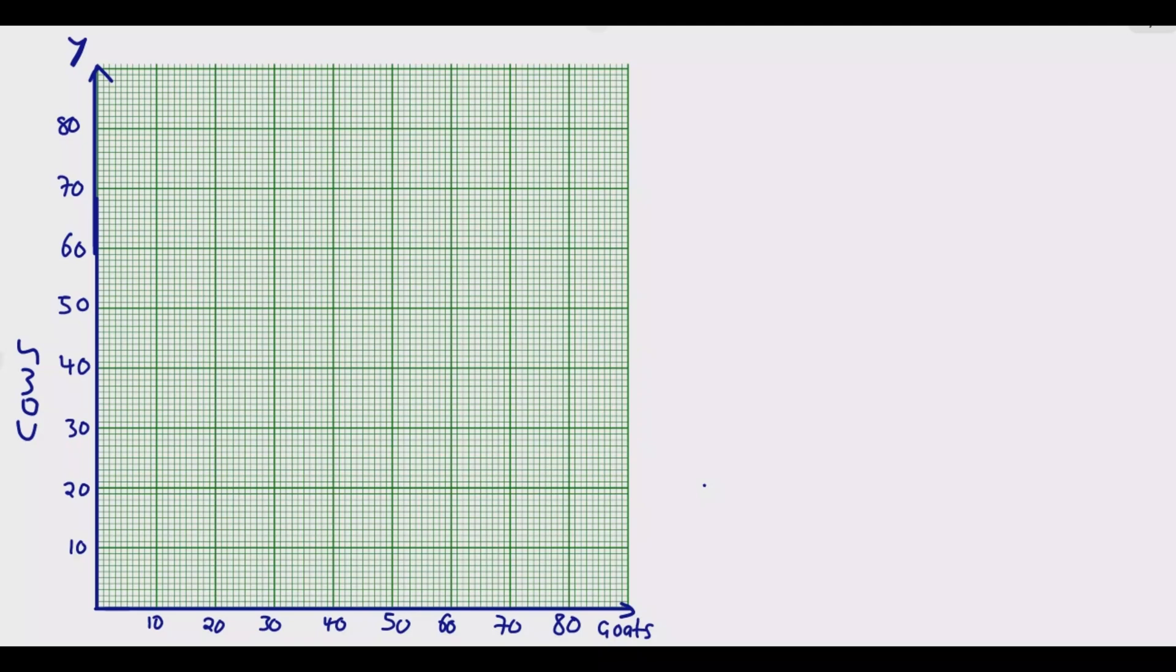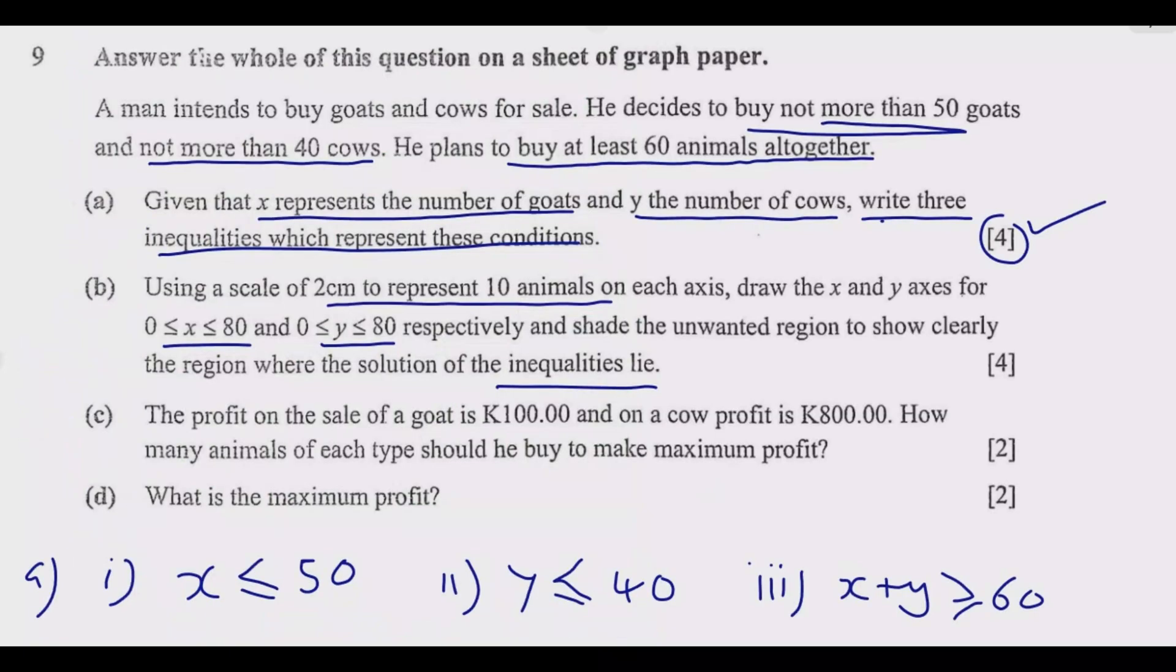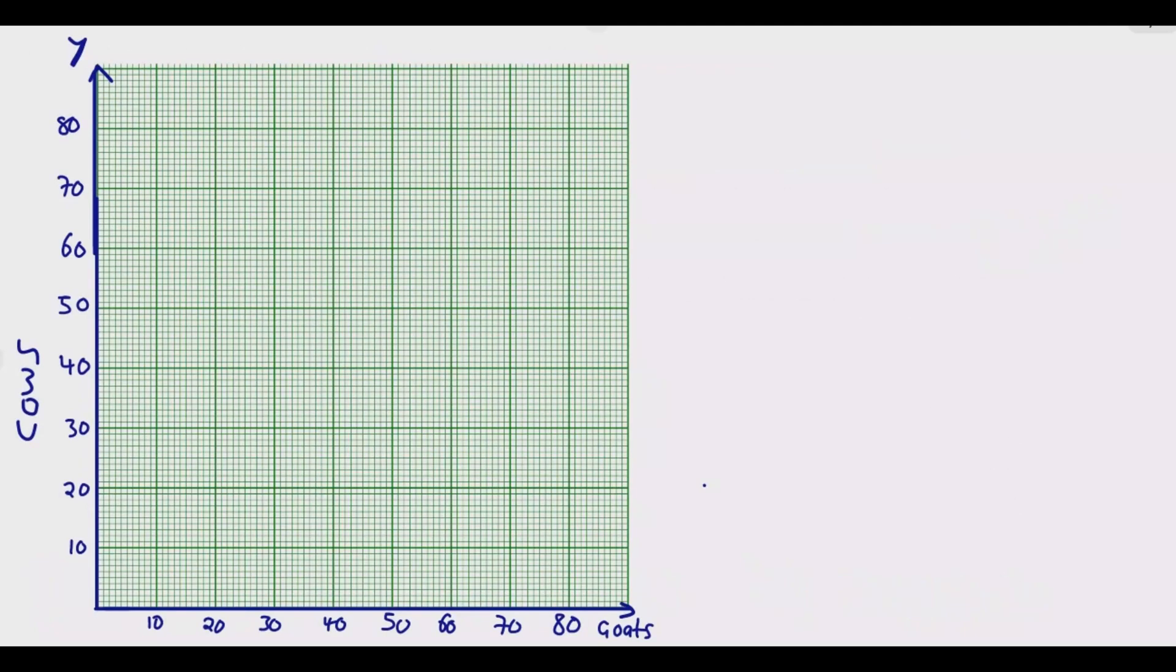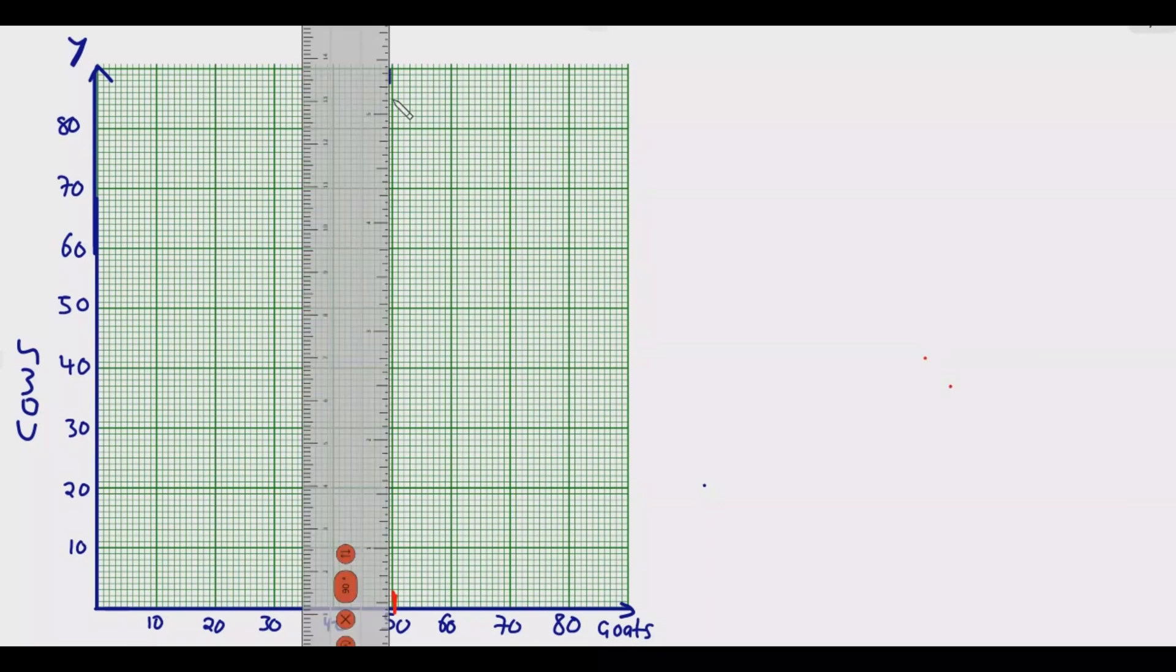So what you notice is I've labeled the graph properly. This is what you need to ensure. Take note that you label the x-axis properly so that you don't lose unnecessary marks. So let us start now plotting these. The instruction was 2 centimeters, which is this, represents 10 units of animals. So the intervals are 10. So that's what you need to ensure that you follow those instructions. So the first one is x is less or equal to 50. So you go to 50 along the x-axis. So this is where the maximum will be. So I just need to get the ruler and draw a straight line there.